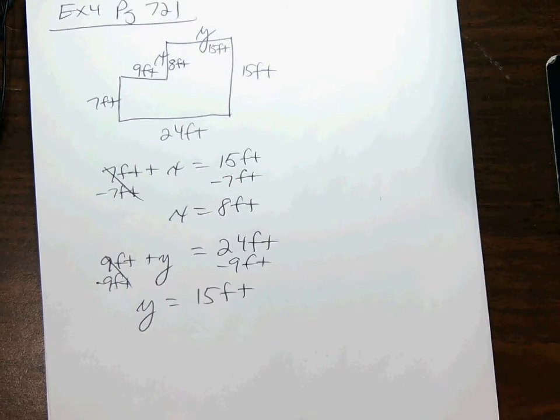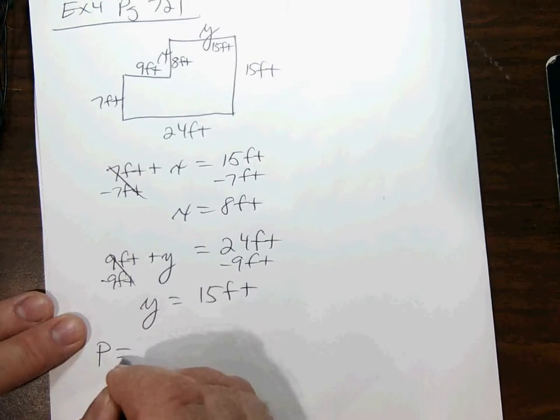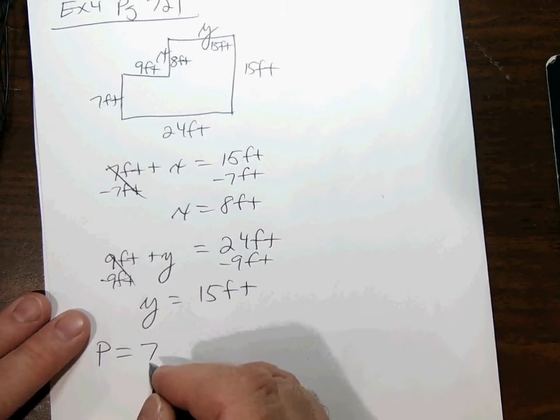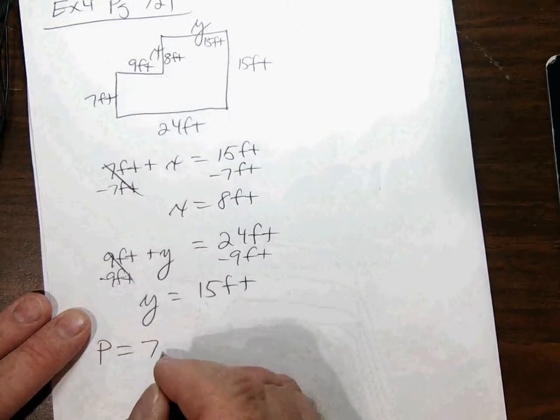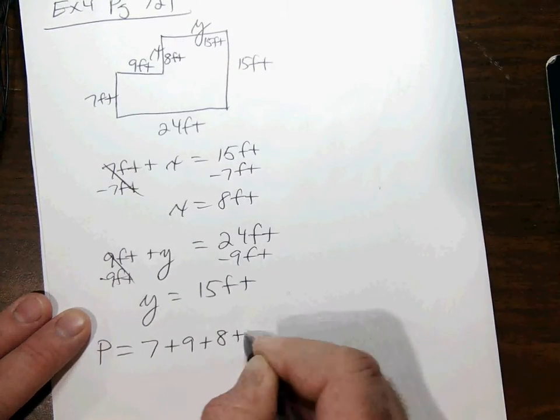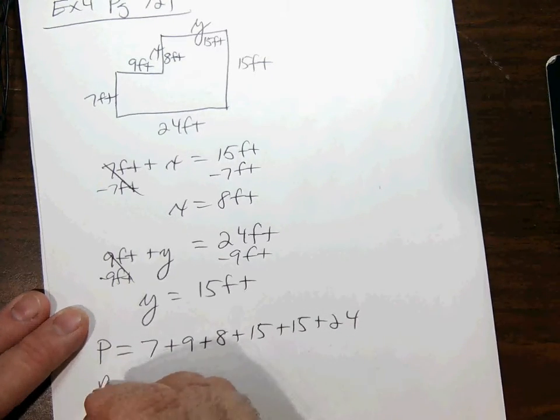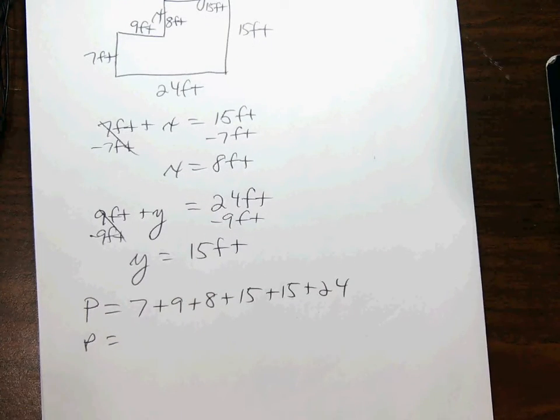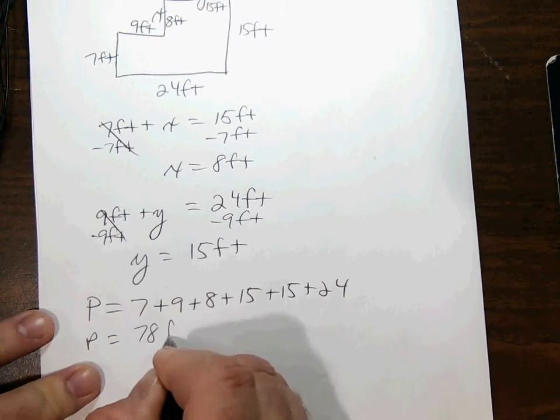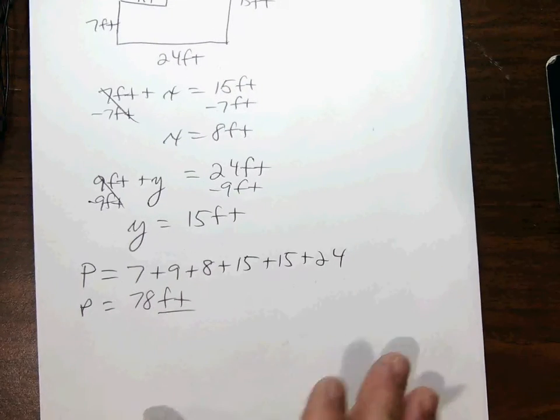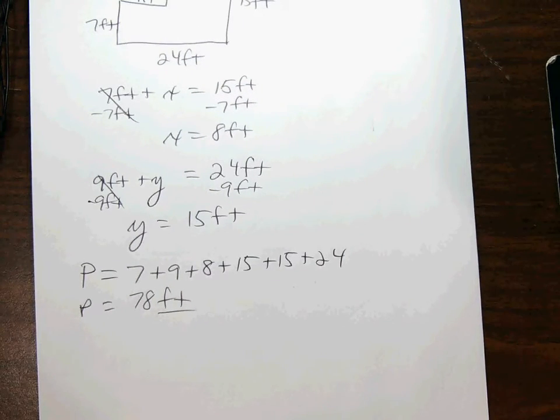Now I'm asked to figure out the perimeter. Now that I know these two pieces of information, perimeter is pretty simple. Add all the sides up. I'm going to leave the unit of feet off here. Everything's in feet, so 7 plus 9 plus 8 plus 15 plus 15 plus 24. They're all feet. And if we crunch those numbers, we will get 78 feet. Just that easy.